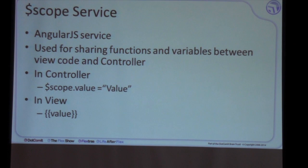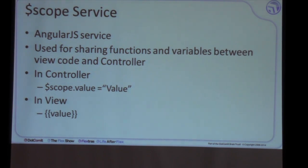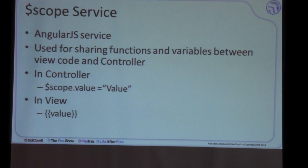The scope service is an Angular-specific service used to share data between view code — HTML — and the controller — JavaScript. In the controller we add values to the scope service; for example, scope.value equals a string. But it could be a number, an object, or a function — you can store anything in the scope service. To display it in the view, we use double curly bracket notation, which is almost the same as Flex binding using a single curly bracket, except here we use two instead of one.